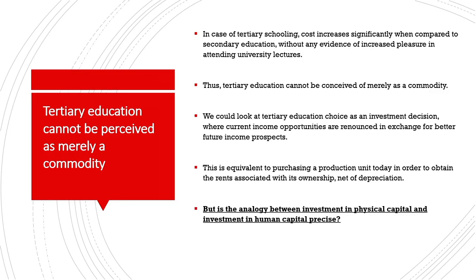It is here that we can look at tertiary education choice as an investment decision where current income opportunities are foregone in exchange for better future income prospects. This is equivalent to purchasing a production unit or physical capital to obtain the rents associated with it in future. But the similarity ends here — we need to ask whether the analogy between investment in physical capital and human capital is precise, or are there differences? Can physical capital and human capital be traded in the market in exactly similar ways?